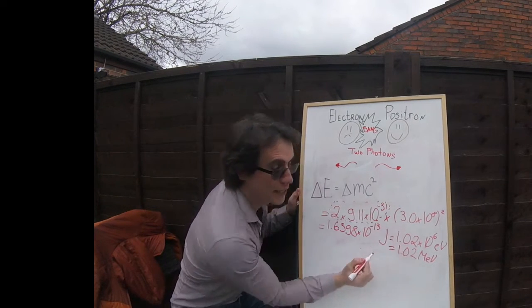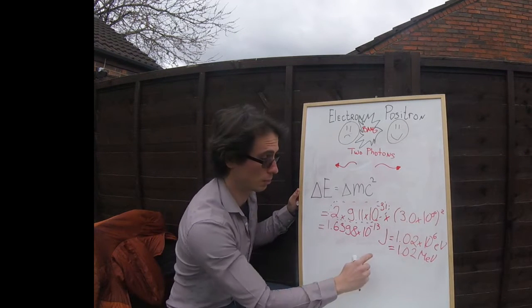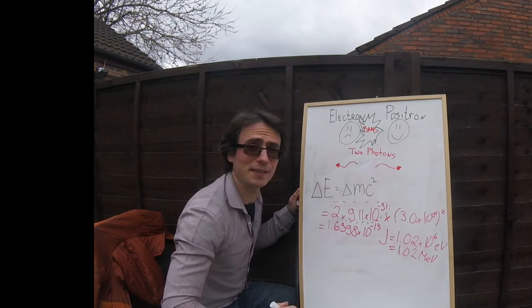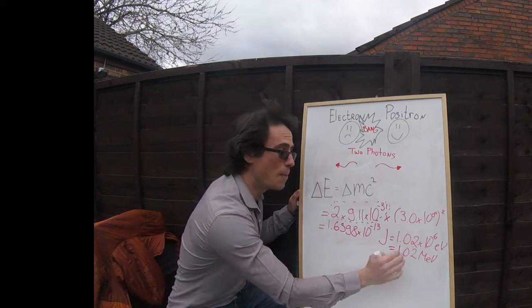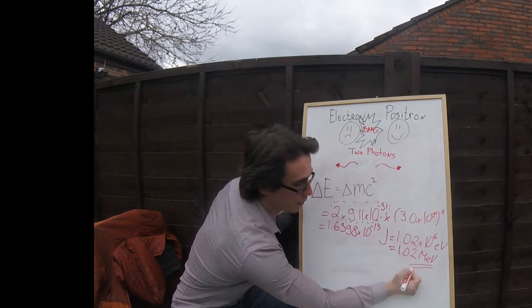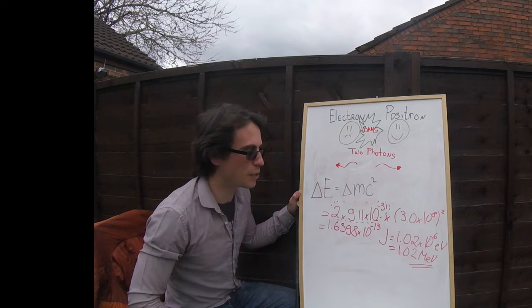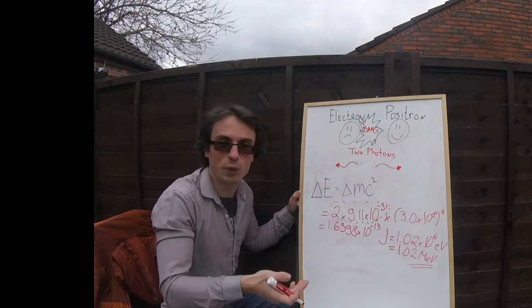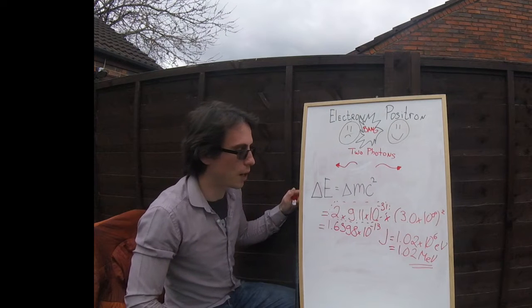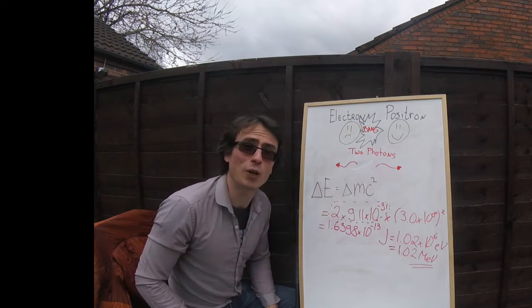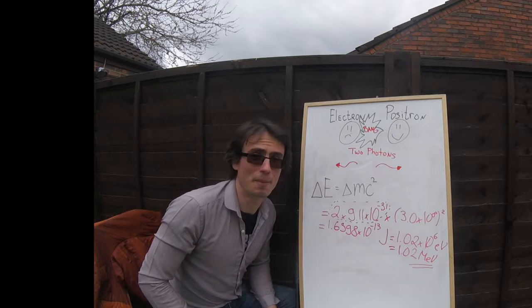Now notice over here I've converted that to electron volts: 1.02 times 10 to the 6 electron volts. And I've also converted that to mega electron volts. This is quite a common number that you tend to see quite a lot, particularly if one is to do with conservation of momentum.